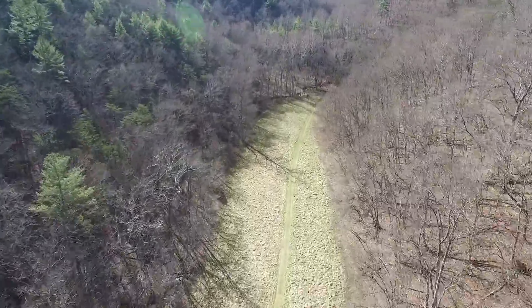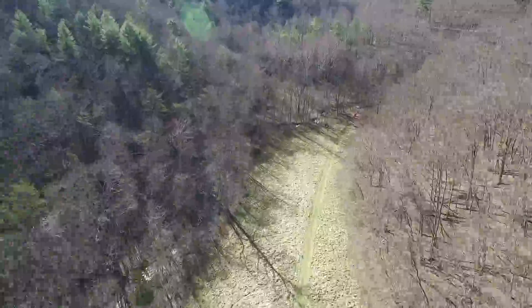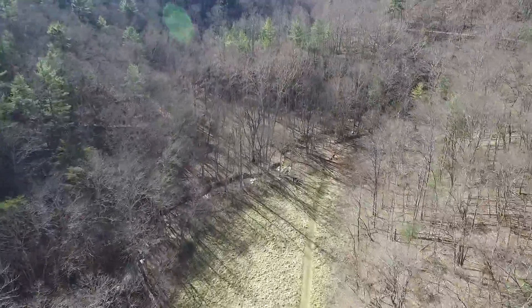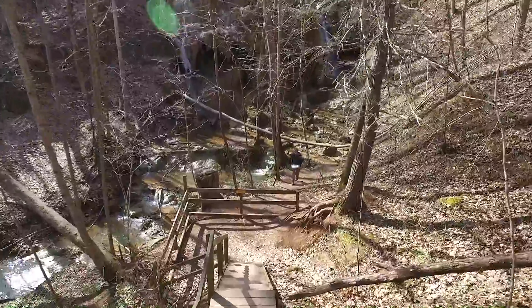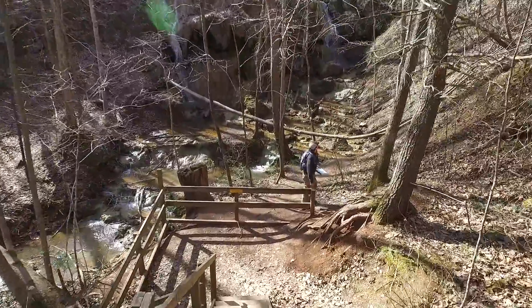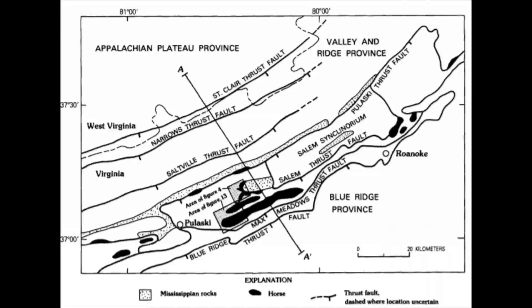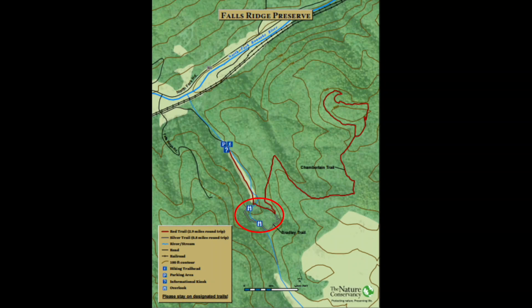This part of southwestern Virginia has been heavily folded and faulted by major orogenies including the Grenville, Tectonic, Acadian, and the Alleghenian. The tectonic activity caused by one of these events led to the creation of a large fault within the preserve, known as the Salem Fault. It is located in the southern portion of the preserve. This fault is about 300 million years old and was created during the development of the supercontinent Pangea during the Alleghenian Orogeny.